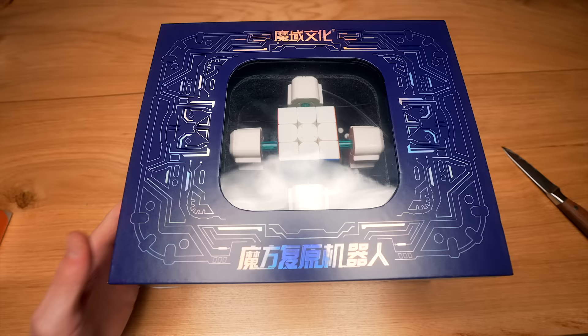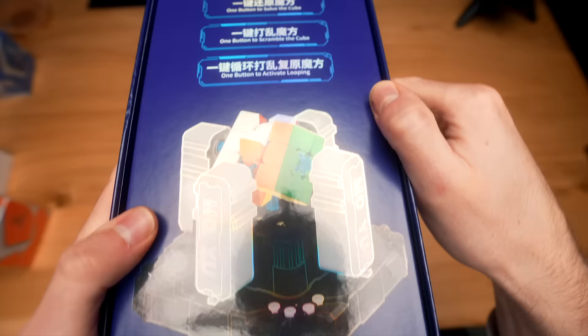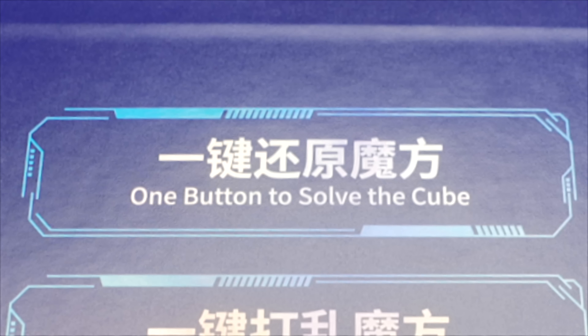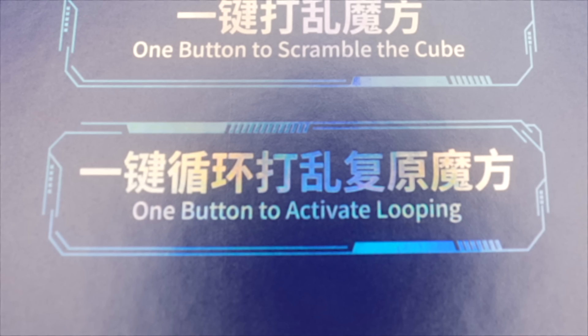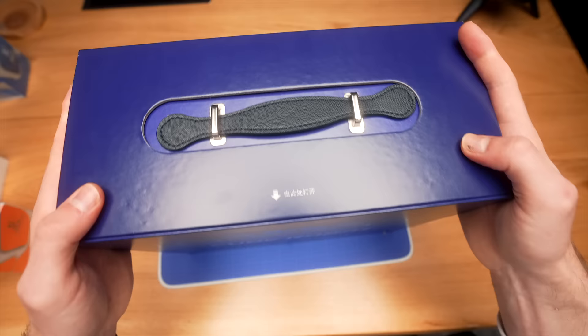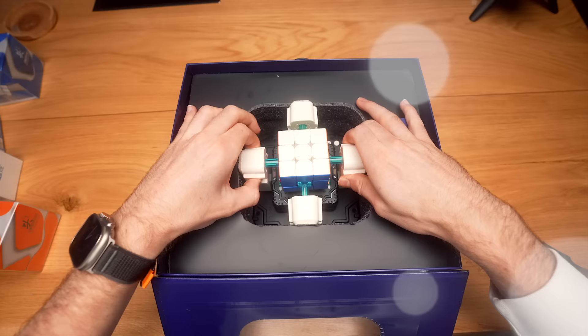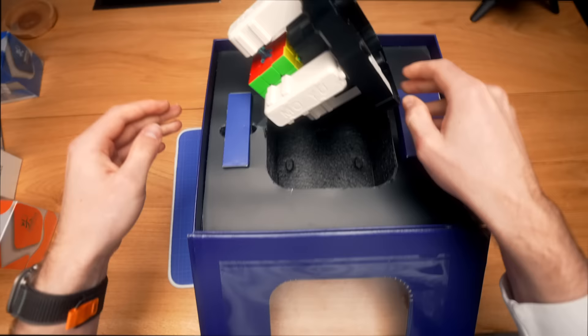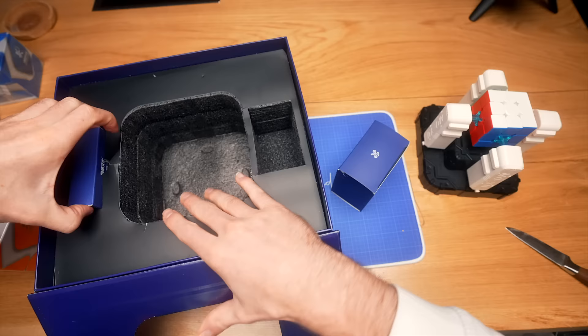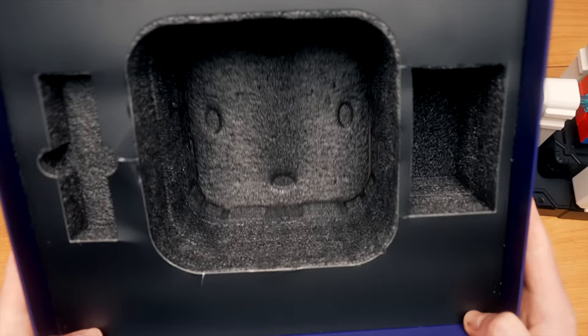So this is the $90 MoYu Cube robot. Let's see what he can do. One button to solve the cube, one button to scramble the cube, and one button to activate looping. Looping. And of course there's a handle so I can always bring the robot with me. Anyway, so let's open this boy up. Oh no.